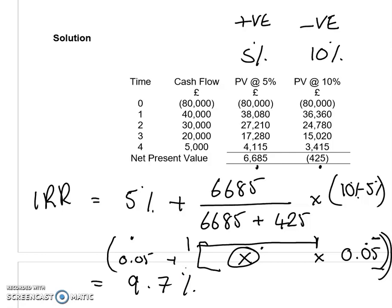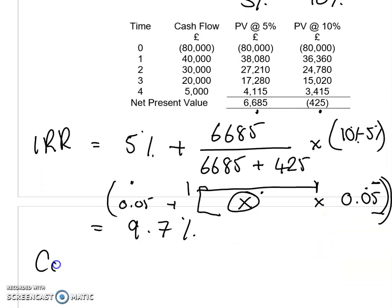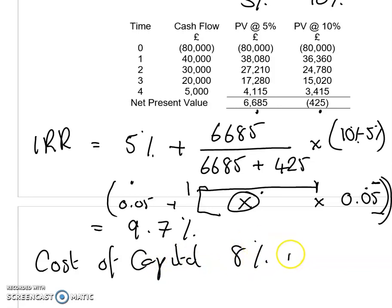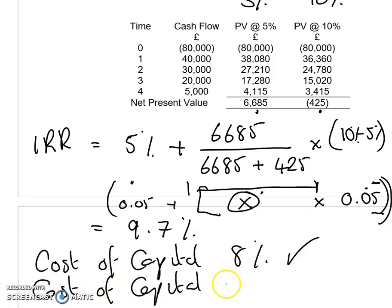That comes to 9.7%. If you just calculate the IRR itself it doesn't mean anything — you actually have to compare it to the business's cost of capital. So in this case, if the cost of capital for a business is 8%, the project will go ahead. If the cost of capital is 12%, then it wouldn't.